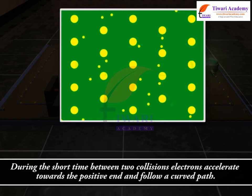During the short time between two collisions, electrons accelerate towards the positive end and follow a curved path.